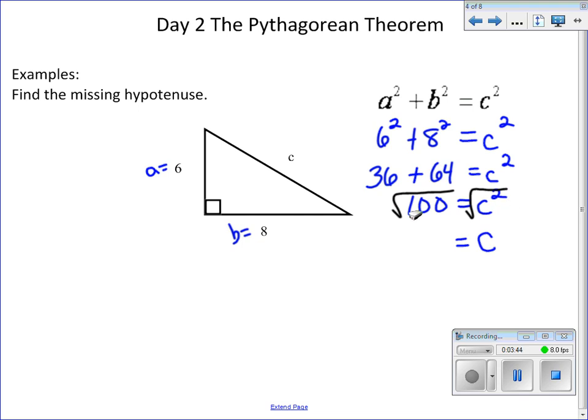The square root of 100—we have to ask ourselves what number times itself gives us 100. We would say 10. So we find that 10 equals C, or C equals 10. The measure of the hypotenuse is 10.